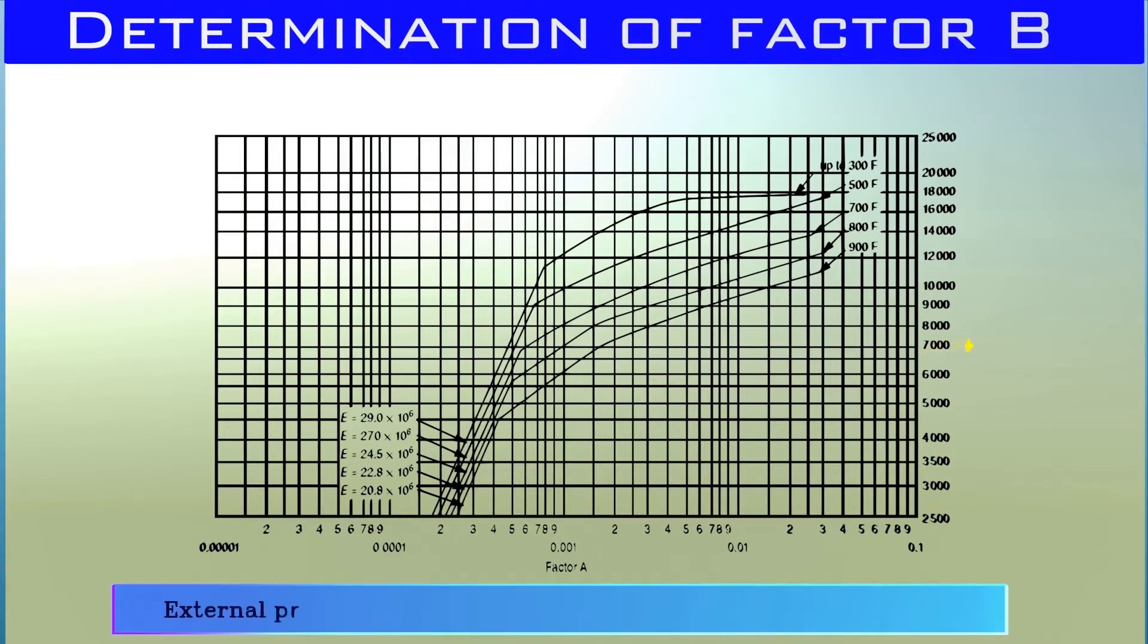Here is the external pressure chart for factor B, only applicable to carbon and low-alloy steels. The horizontal axis is for factor A and the vertical axis for factor B values. These curves represent the operating temperature and relative strength of the materials of construction of the vessel.